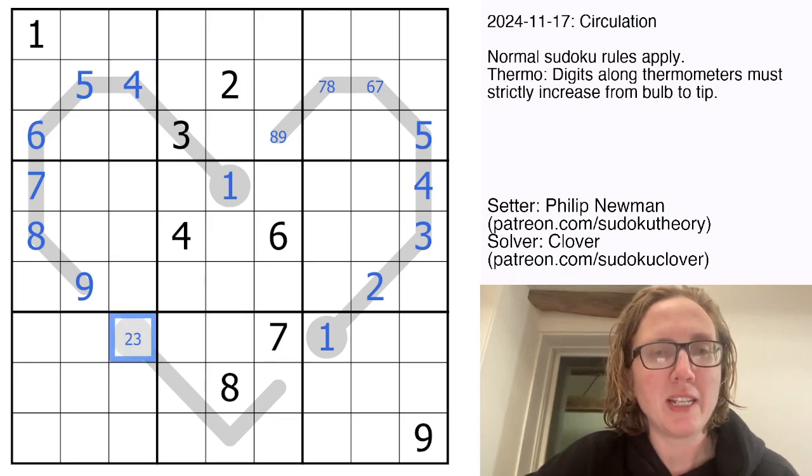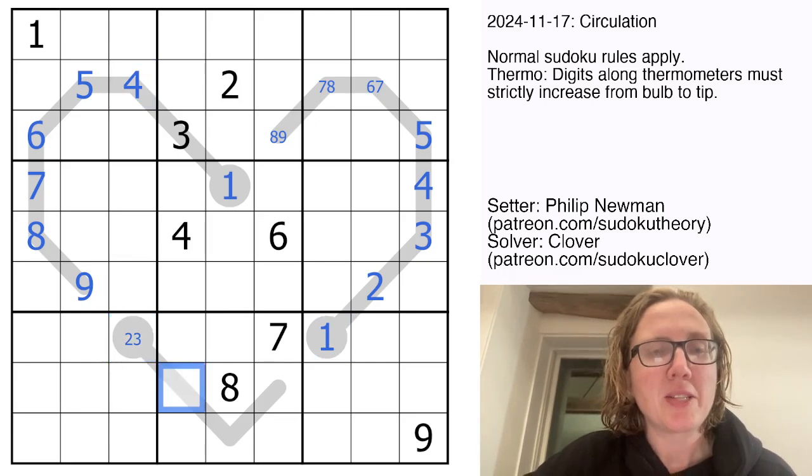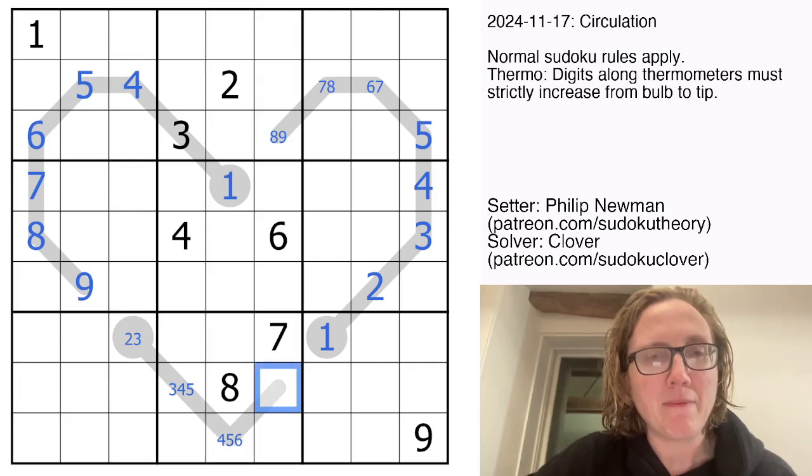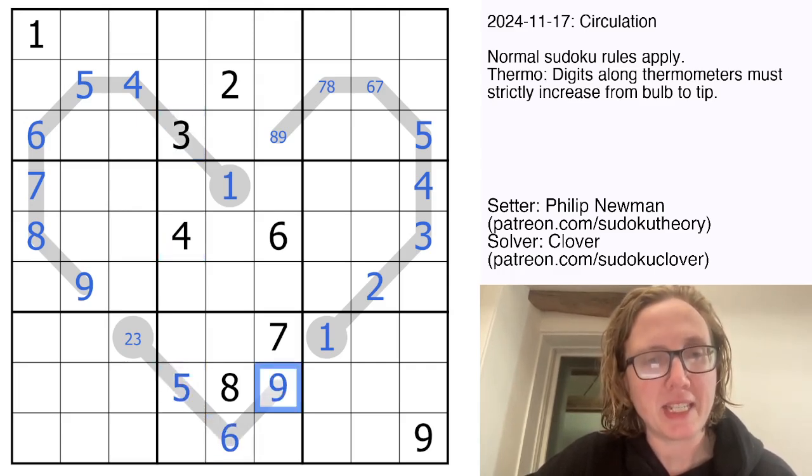So then this would be three four or five, this would be four five and six, this could be five six and nine. However there's a three and four in the column already so that's going to be my five six and nine in that order. That leaves me with only one two three four to place in the region.